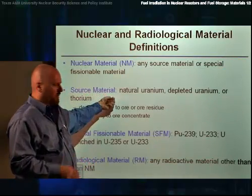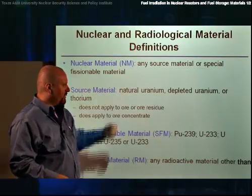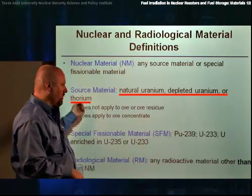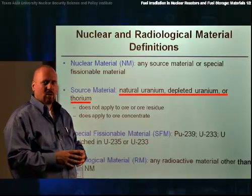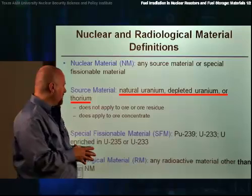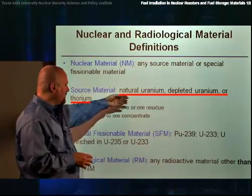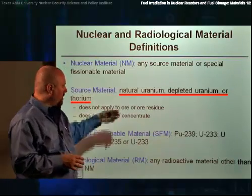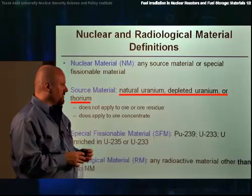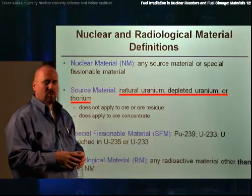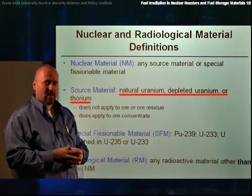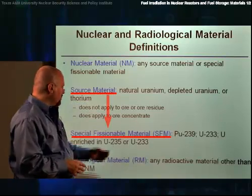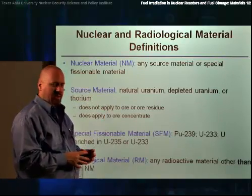What is source material? That includes natural uranium, depleted uranium, or thorium — materials that we might find in nature. All these are materials that we could use as a source material at the front end of the fuel cycle, which could then lead to special fissional material.